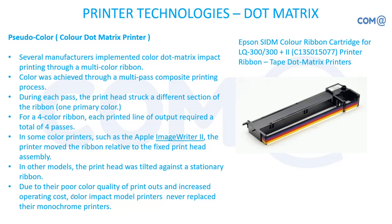A color dot matrix printer will have different heads for covering different colors. However, people have not chosen this much in the industry because even though the dot matrix prints in color, the output quality is not good — the resolution is poor. You will still see individual colored dots — red dot, yellow dot, cyan dot — not close to each other. It will appear as a dotted printout. So organizations prefer a single-color monocolor dot matrix printer, which is widely used because of continuous usage, less maintenance, and low consumable costs.